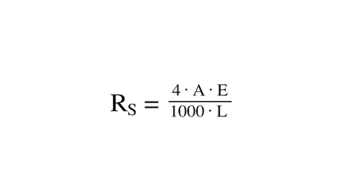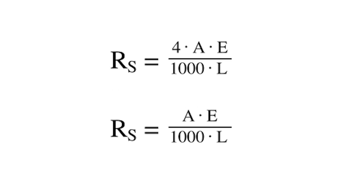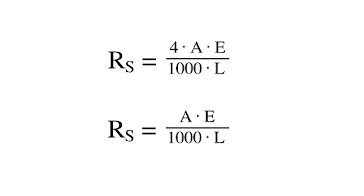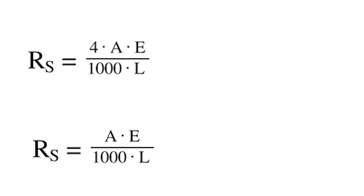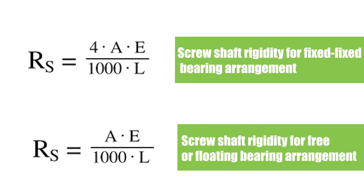Here's the equation for rigidity of the screw shaft when the ball nut is halfway between the two fixed ends. Comparing the equation for rigidity with a free or floating end bearing arrangement with that of a fixed-fixed end bearing arrangement, you can see that the screw shaft rigidity is four times higher when fixed-fixed mounting is used than with fixed-free or fixed-floating mounting.